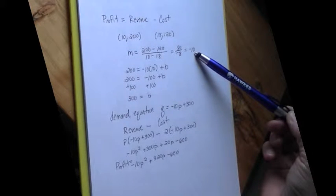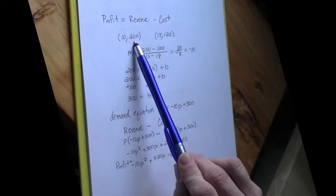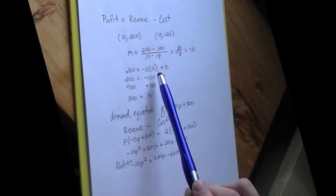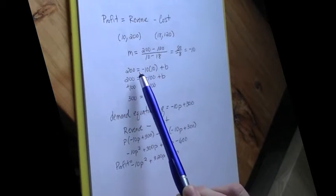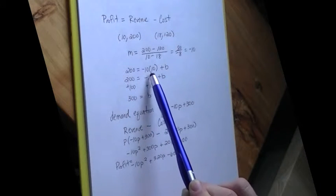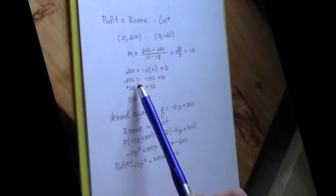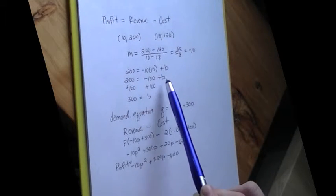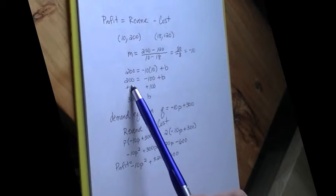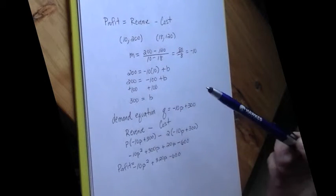I need to find the y-intercept of my line so I can pick either point. I think I'll go with this point. I know that the output is 200 when the input is $10, so that gives me the equation 200 equals negative 10 times $10 plus my y-intercept. Or 200 equals negative 100 plus my y-intercept. If I add 100 to both sides, I get 300 for the y-intercept value.